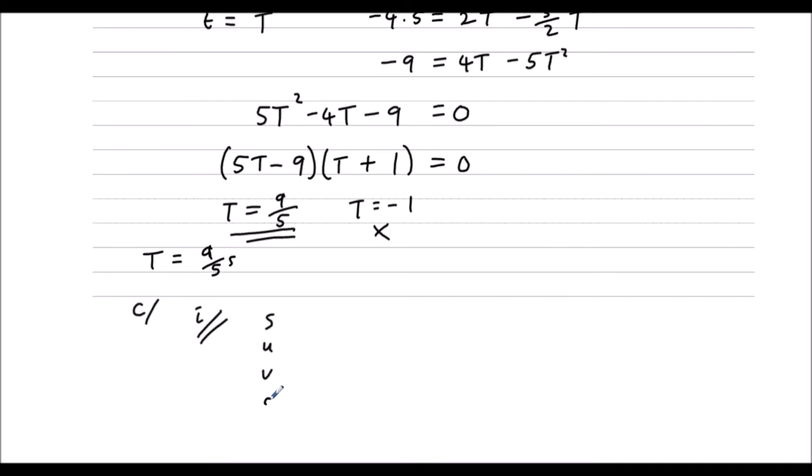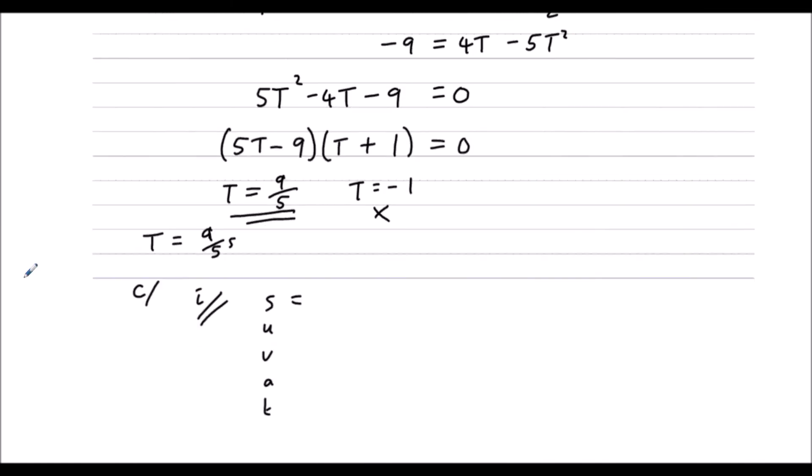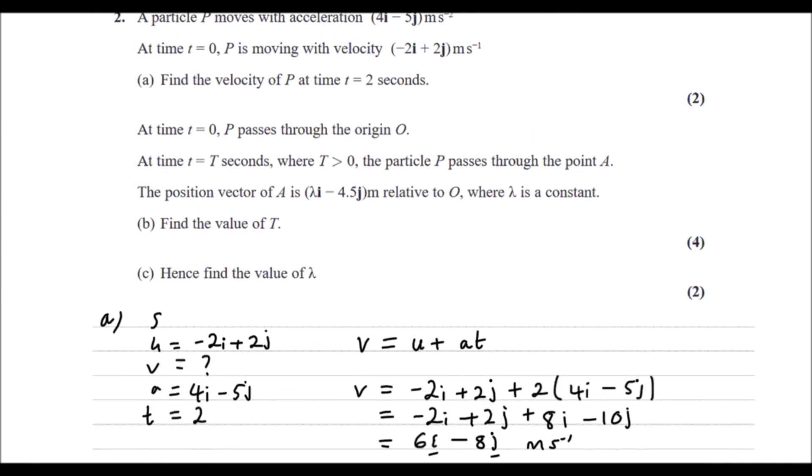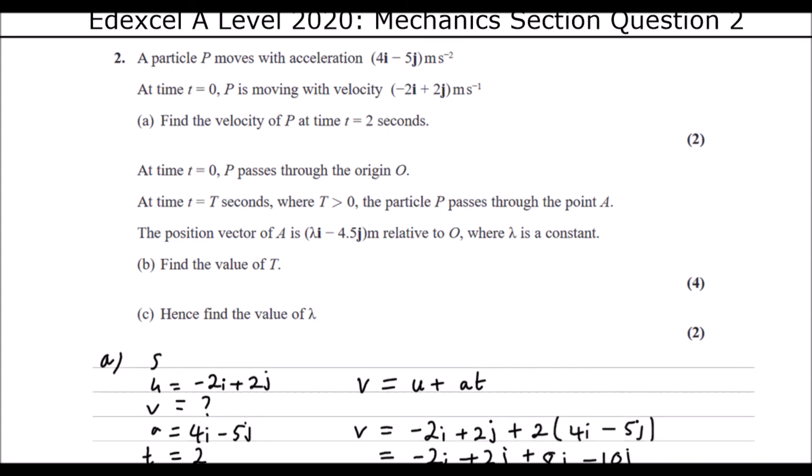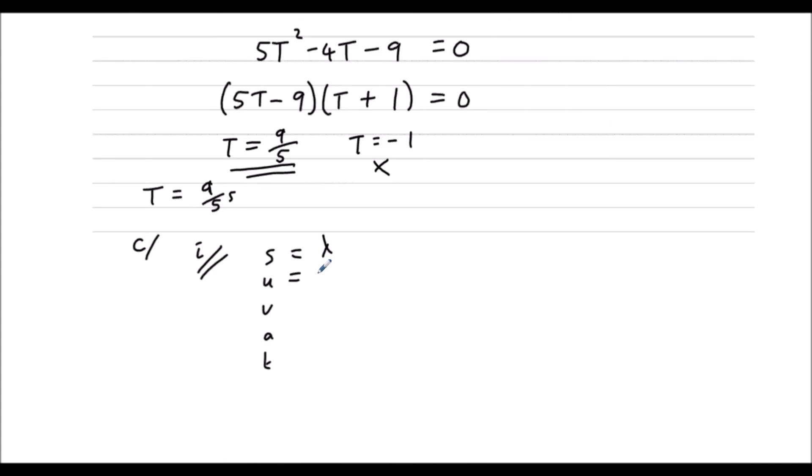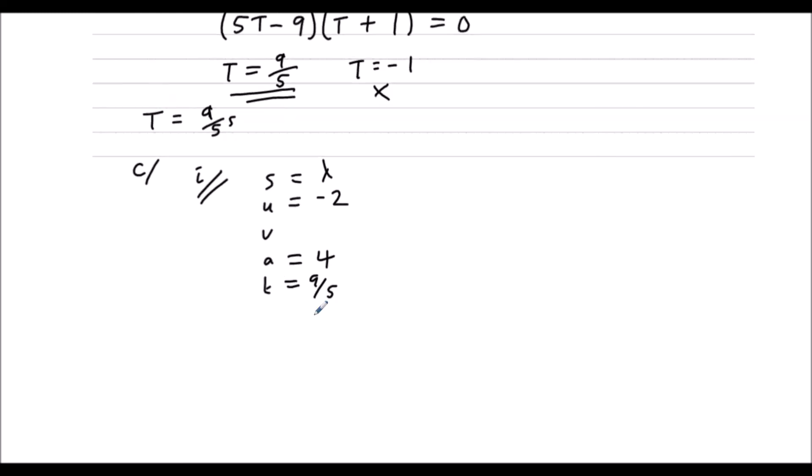What do we know? The displacement is lambda. The initial velocity was negative 2, and the acceleration is 4. So the initial velocity is negative 2, acceleration of 4, and we know now time is 9 over 5. The one without v in it again, that's s equals ut plus half at squared.